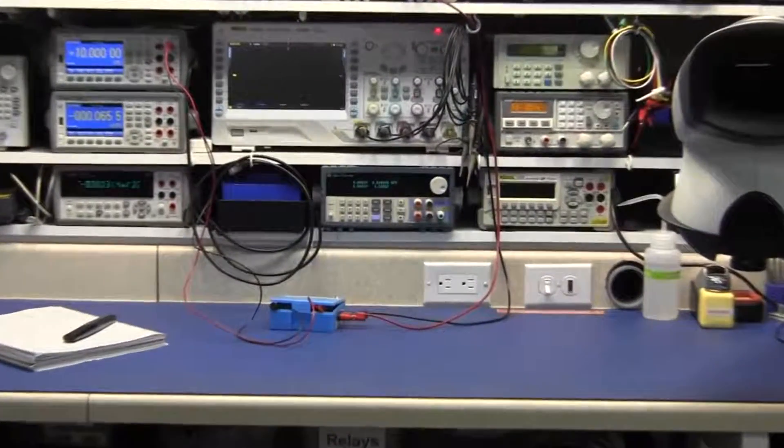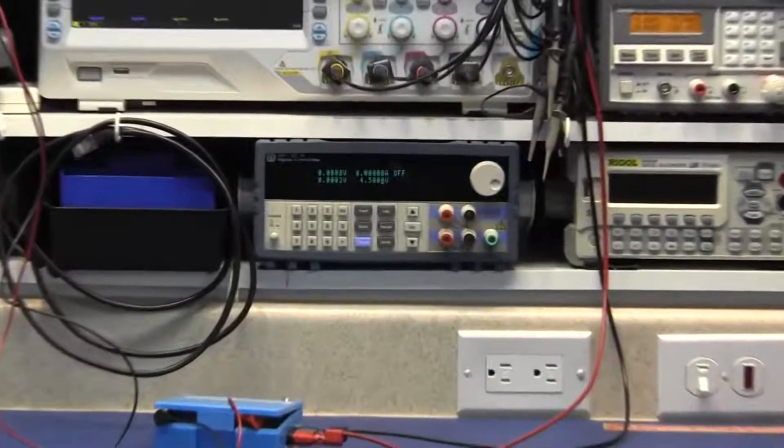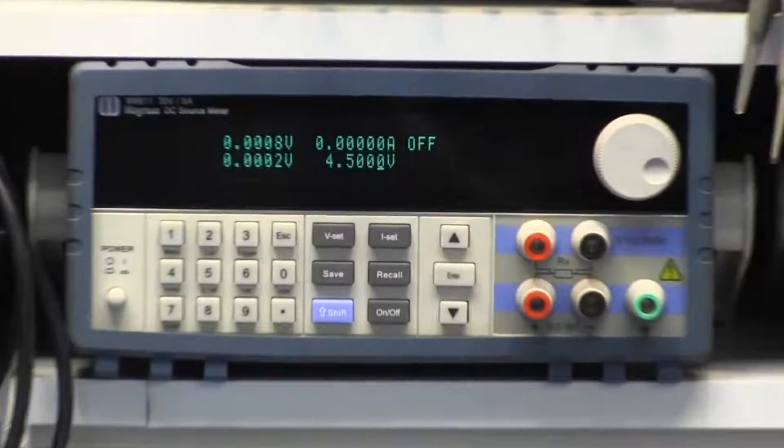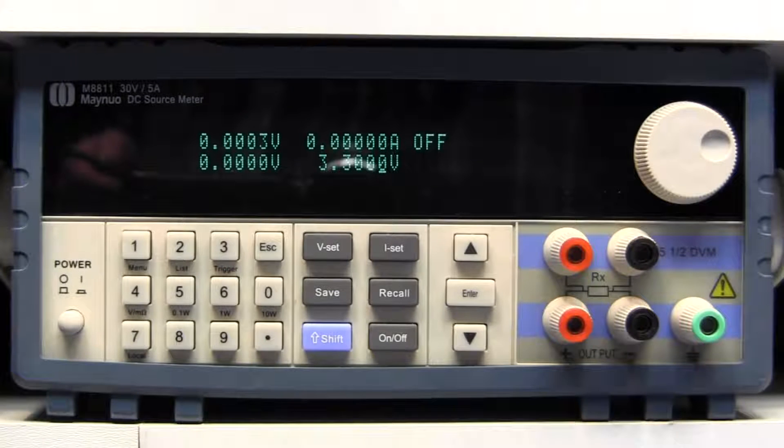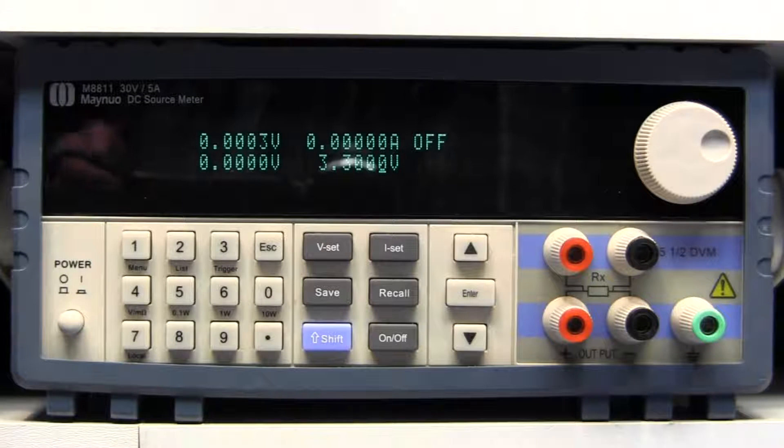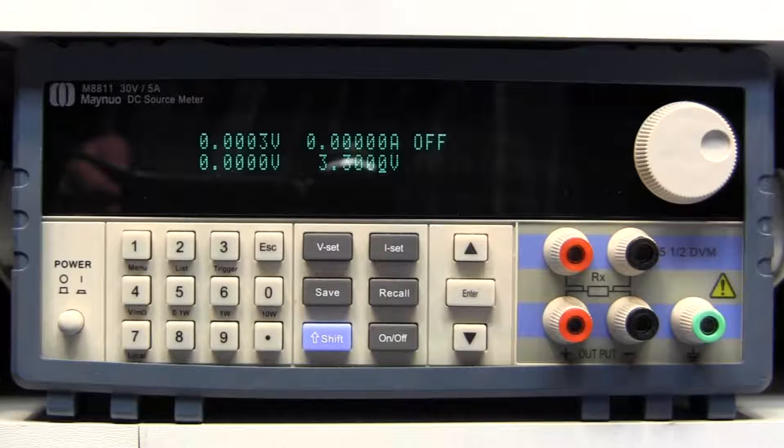Today we'll take a look at the Mainuo M8811 power supply, which Mainuo refers to as a source meter. Let's take a look at that claim and look for any issues such as a power-up spike on the outputs. Martin has done a review of the Mainuo 8800 series, which I will link to in the comments. This video is to test a few specific features and problems of these power supplies.